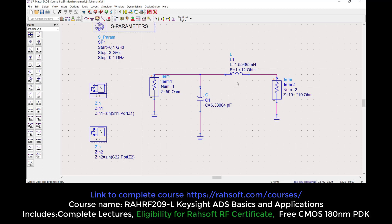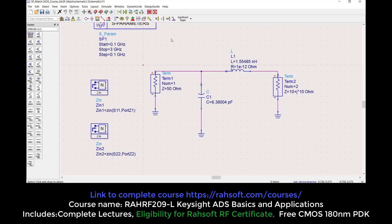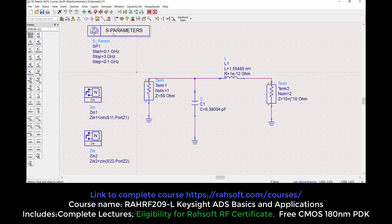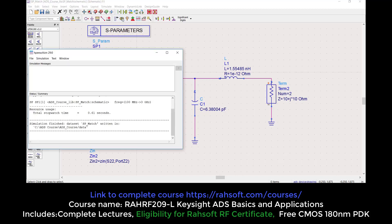I use the LC network with one capacitor and one inductor, and this circuit is matched. Let's measure the S-parameters for this circuit. I use Z_in and Z_out here. Z_out is the output impedance and this is input impedance, with S-parameter simulation as we did in the previous section. Now everything is ready, we just have to simulate the circuit.